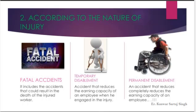The second category is according to the nature of injury. The first type is fatal accidents, which includes accidents that could result in the death of the injured worker. The second is temporary disablement, which is an accident that reduces the earning capacity of an employee. The third is permanent disablement, where an accident completely reduces the earning capacity of an employee.